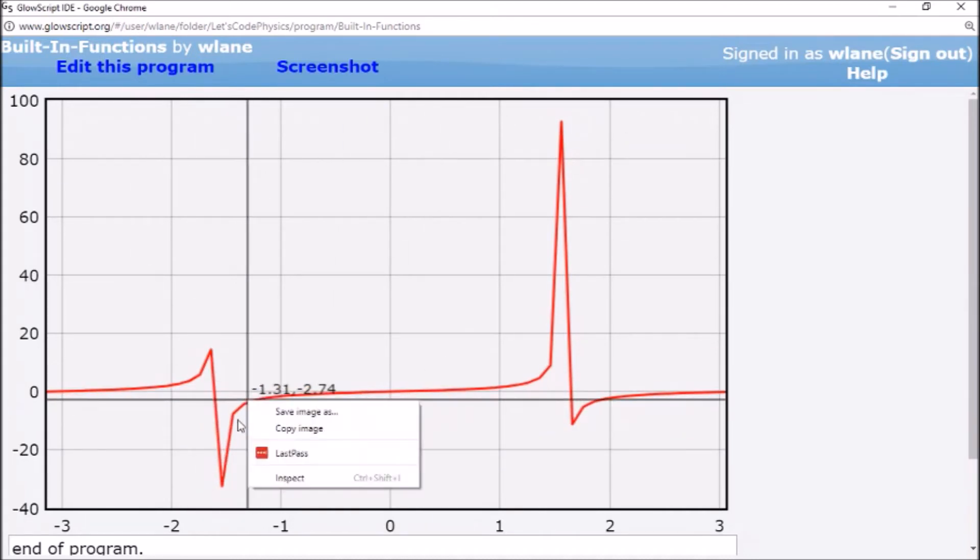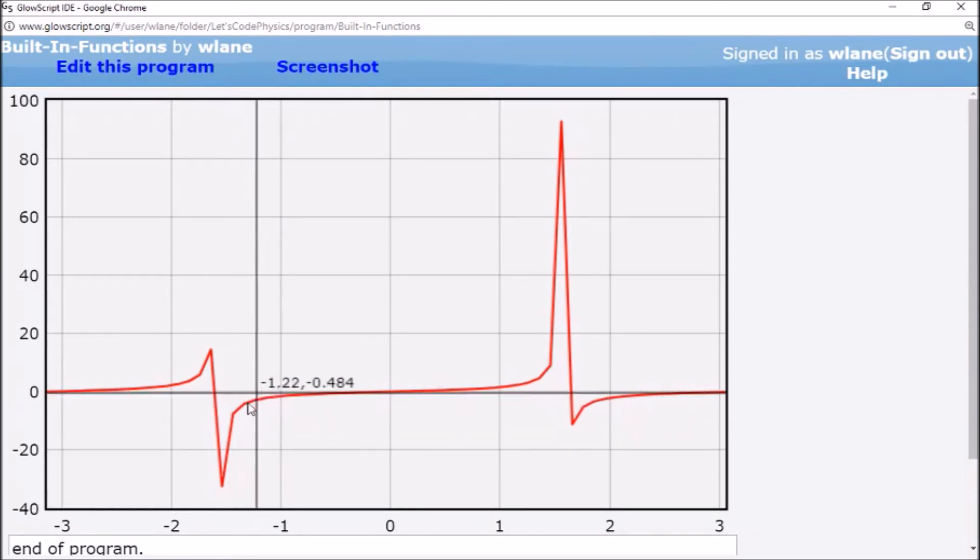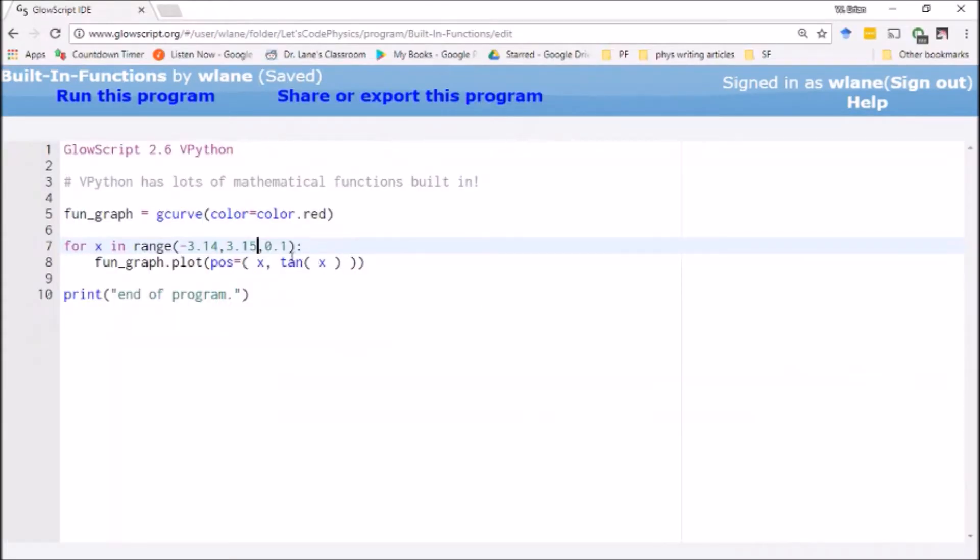So if you look over here, you can get this jaggedness because we're going between different points. If I wanted to smooth that out or if I wanted more of this asymptote, I would have to decrease my step size over here in the for loop. Let's decrease that by a factor of 100.